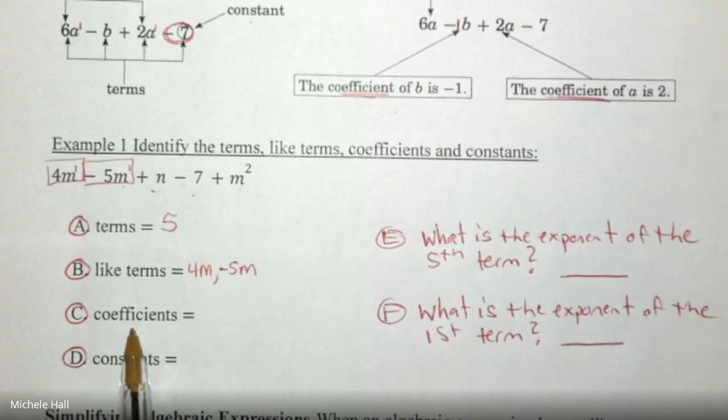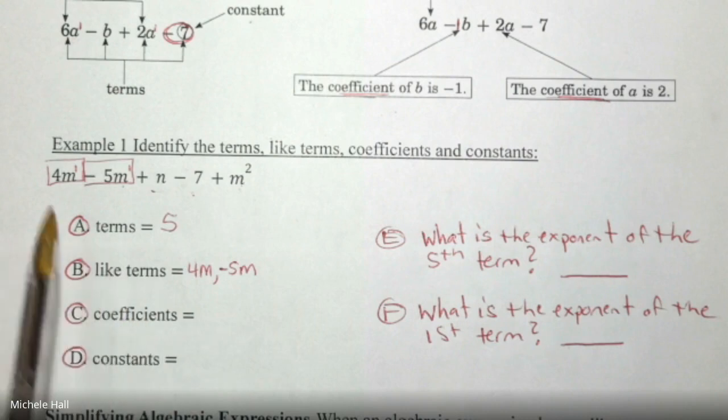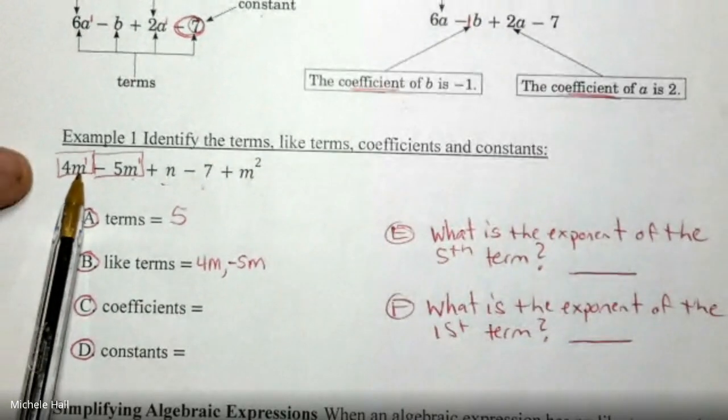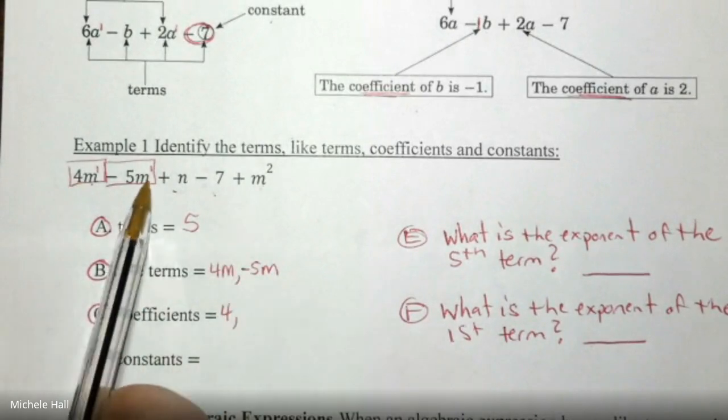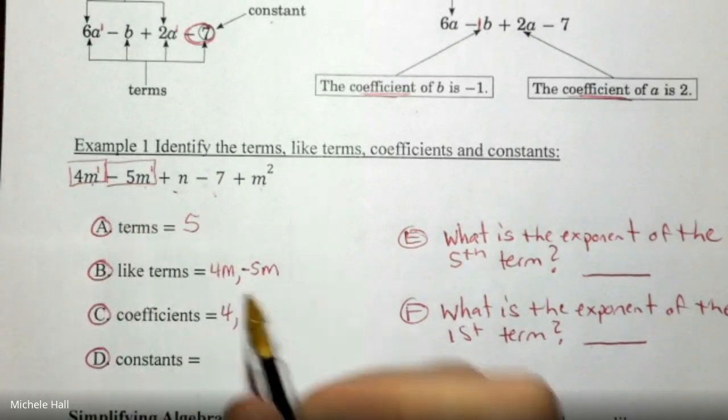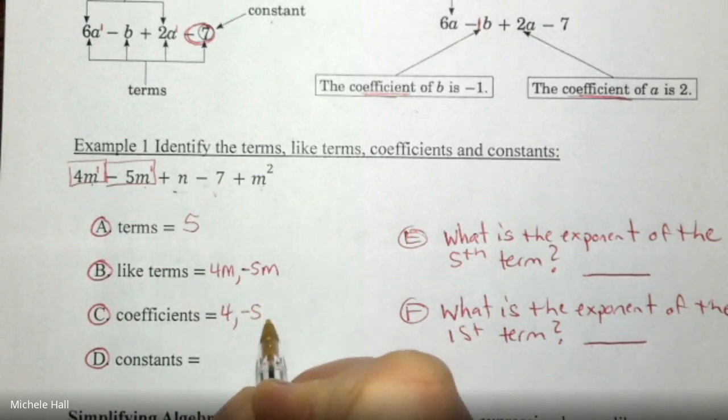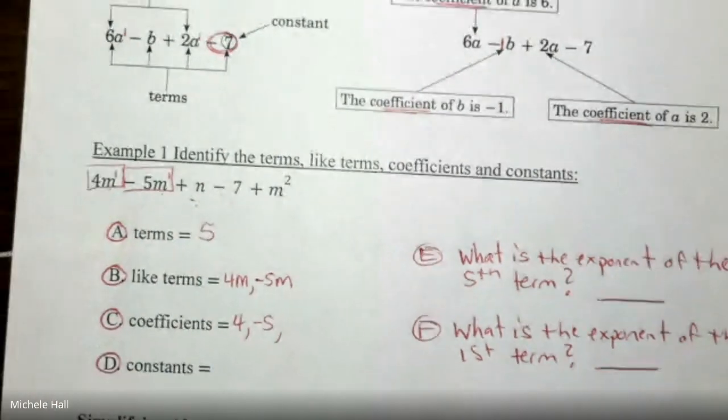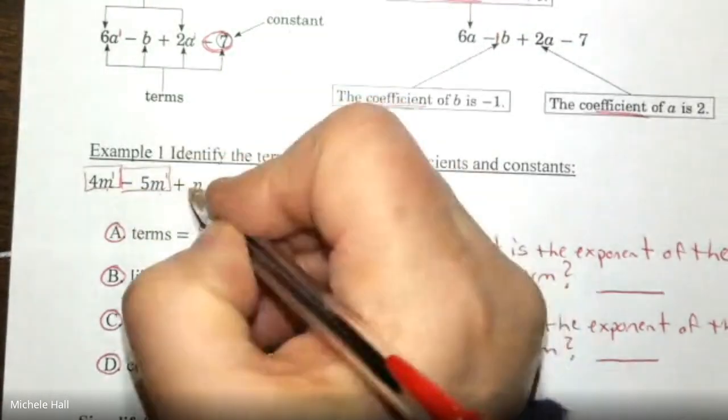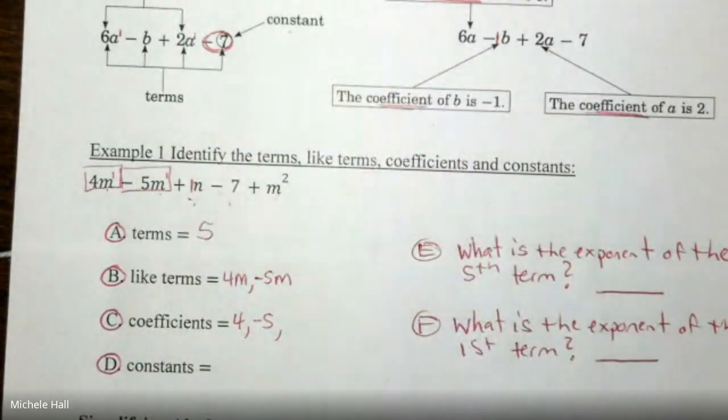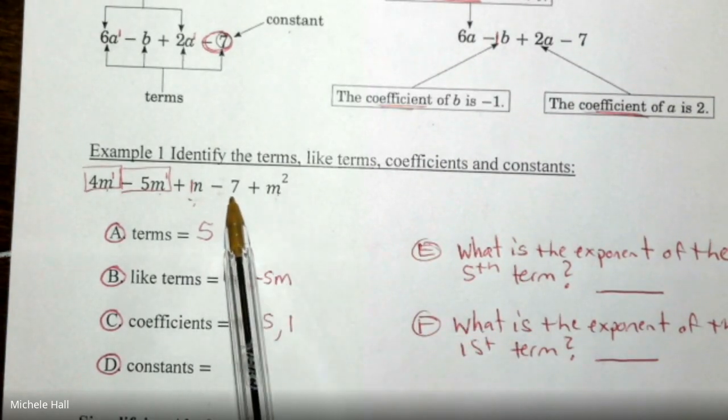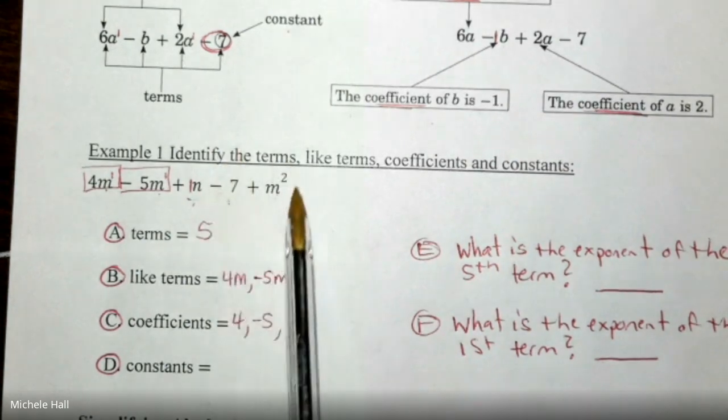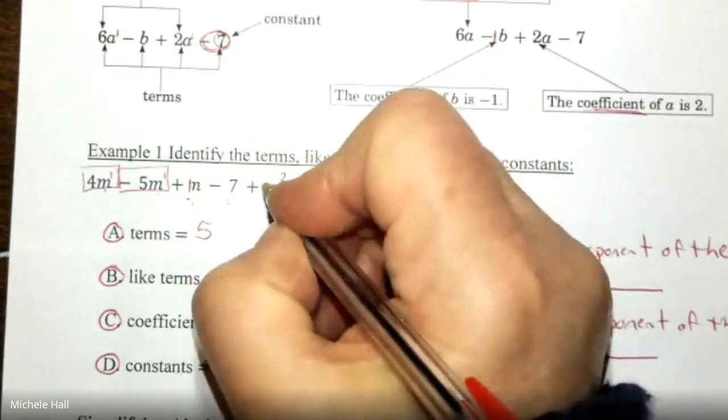Coefficients. The numbers in front of the variable. 4m has a coefficient of 4. Negative 5m has a coefficient of negative 5. n has a coefficient of, make sure you put those numbers in there when you need them. It has a coefficient of 1. Negative 7 does not have a coefficient. It is a constant. m squared has a coefficient of 1.